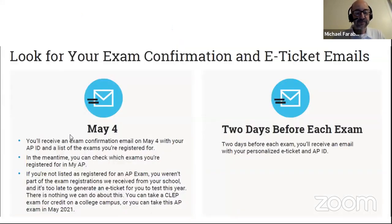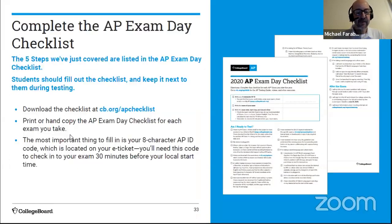On May 4th, you should receive an email confirmation indicating your AP ID and a list of exams you're registered for. Then two days before each exam, you should receive an email with your personalized e-ticket. You can also go to myAP and log in to see your e-ticket. If you go to cb.org/APchecklist, you can print out a checklist of everything you need for exam day.